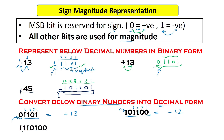One more example: the sign bit is again 1, meaning the number is negative, and the remaining bits give the magnitude. Converting those bits: 32 plus 16 plus 4 equals 52. So this is minus 52. Remember, only the magnitude bits tell us the value; the last sign bit is not part of the magnitude — it only tells us the number is negative.